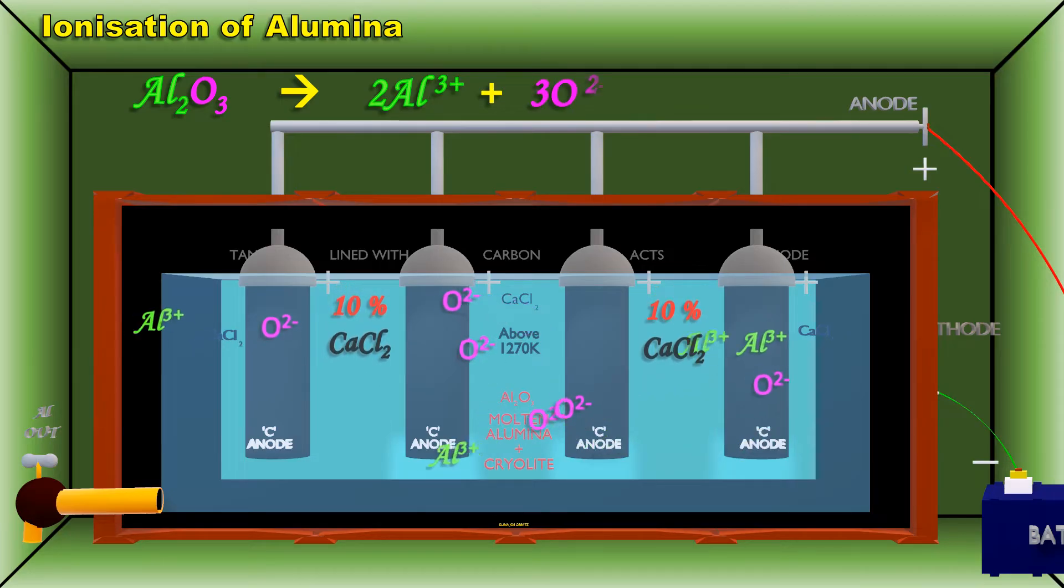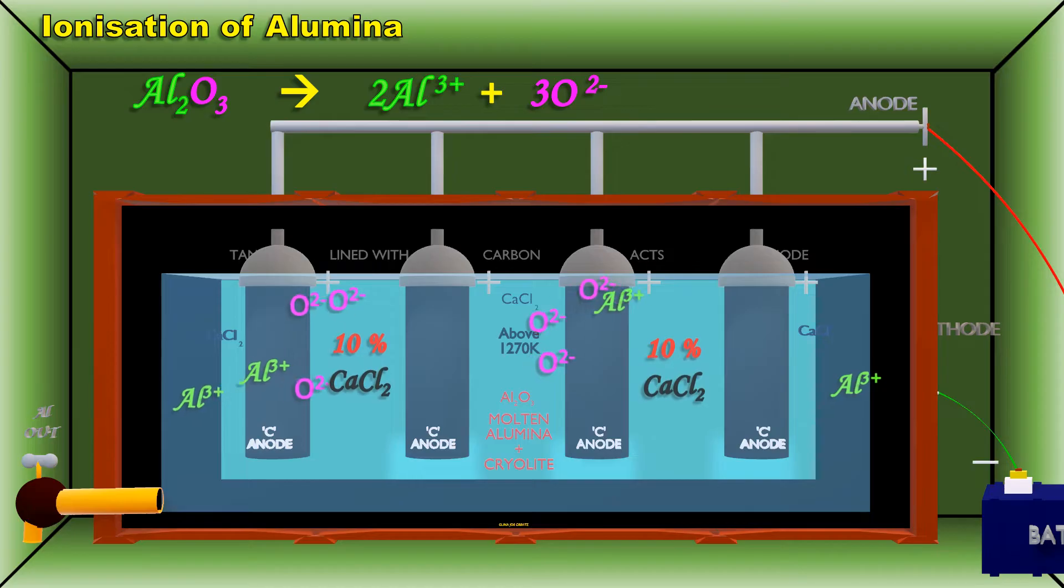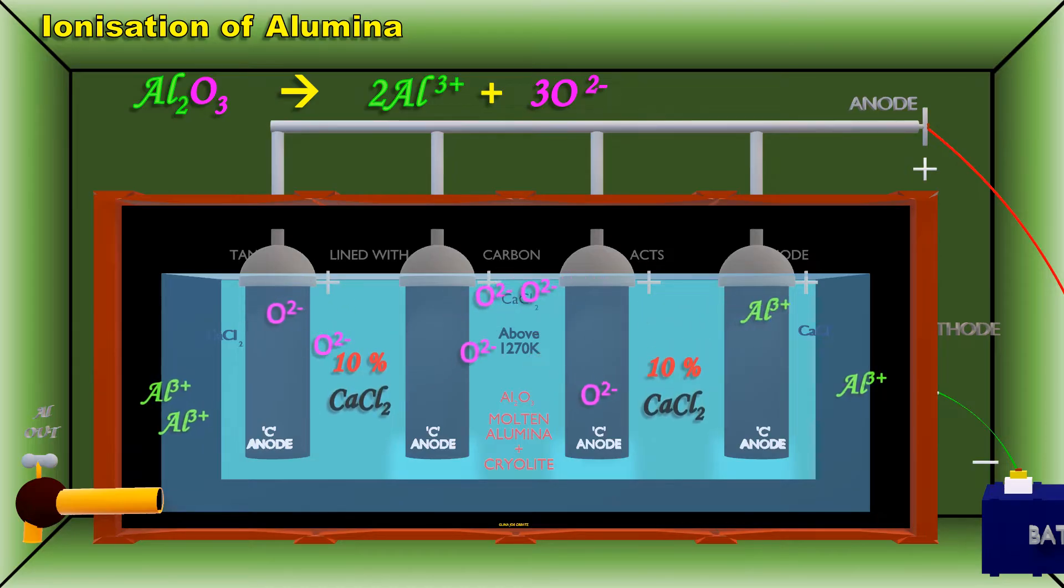Here calcium chloride helps to lower the melting point of the mixture. The fused mixture is maintained at a temperature of above 1270 K.